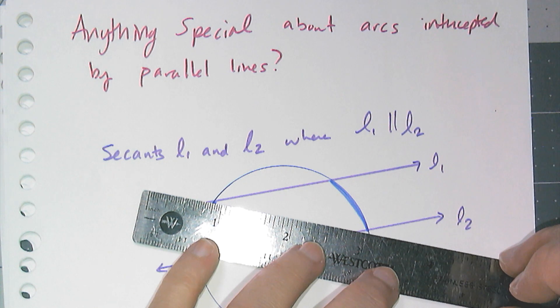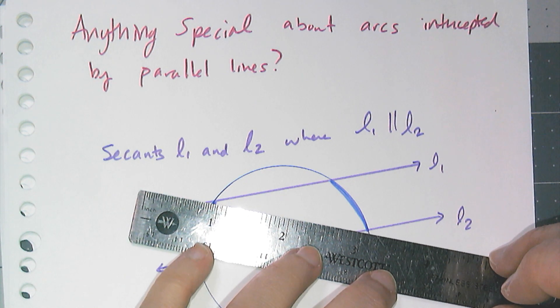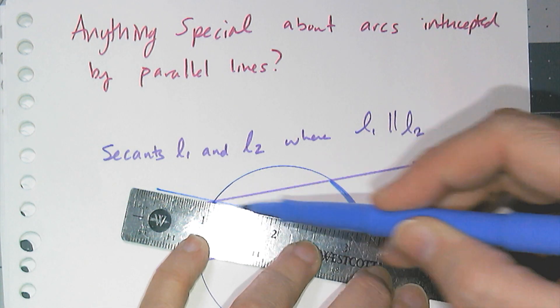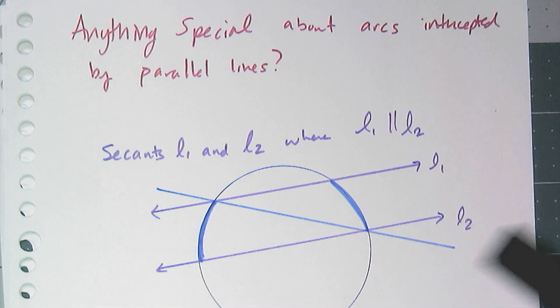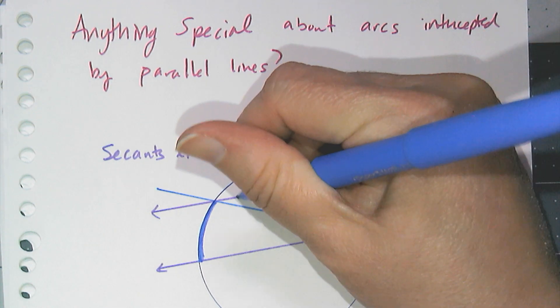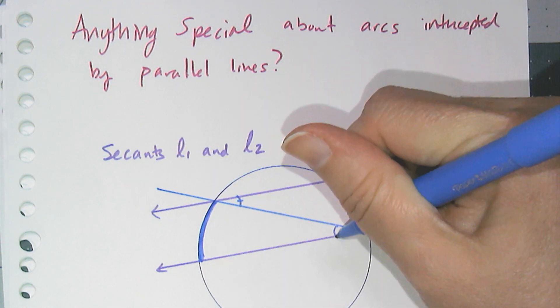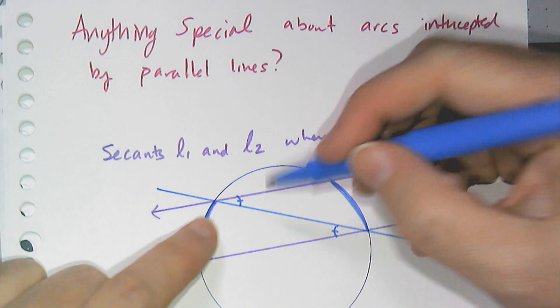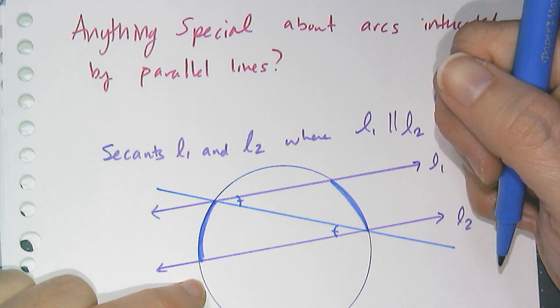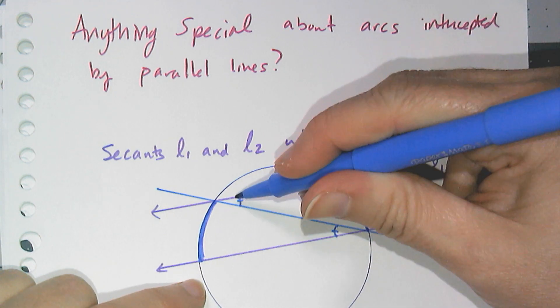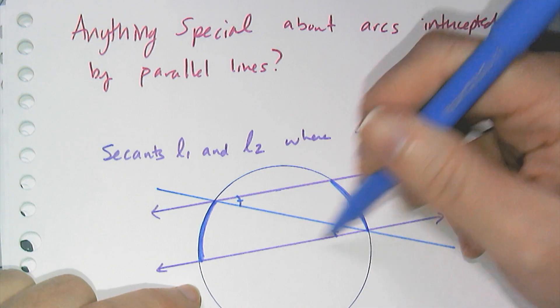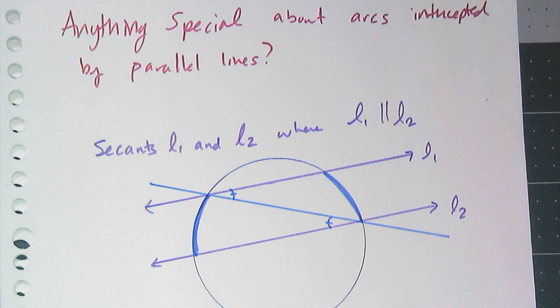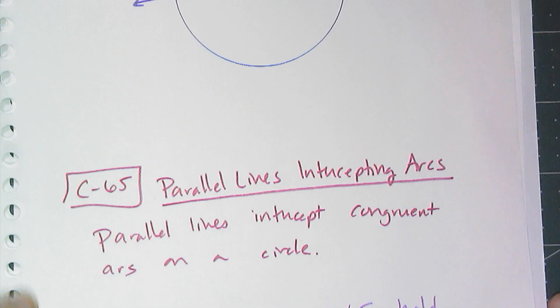And this is actually really easy to prove because when I have parallel lines, by instinct I want to draw in the transversal. And I know by alternate interior angles that those two angles are congruent. And oh, hey, what are those two angles? Those two angles are inscribed angles. So this angle is an inscribed angle that cuts that arc. This angle cuts that arc. Those two angles are congruent. Therefore, those two arcs are congruent, which leads us to conjecture C65.